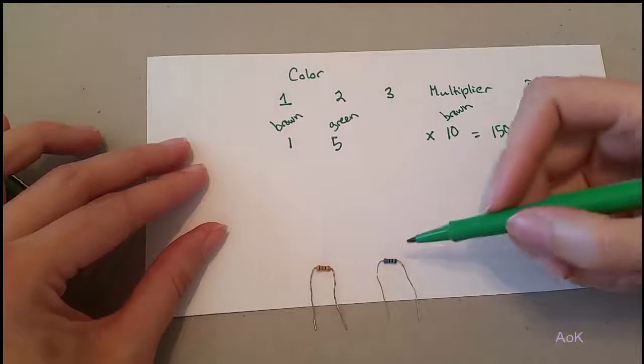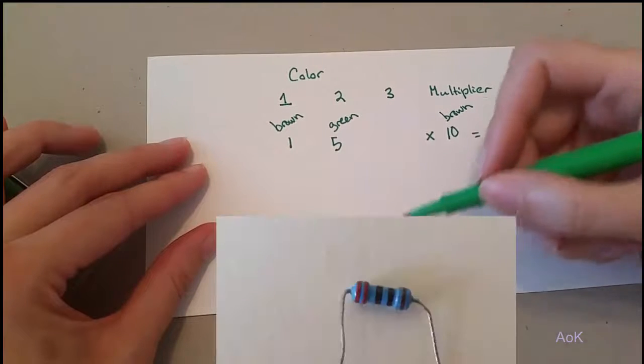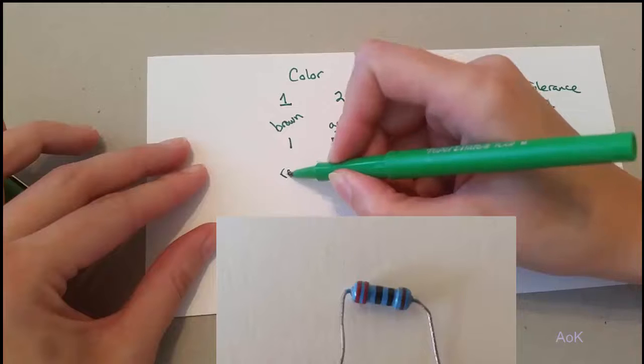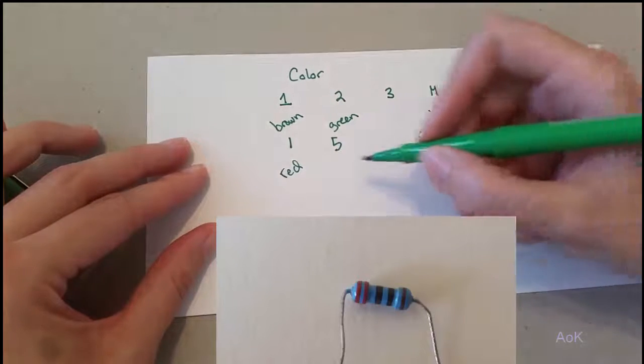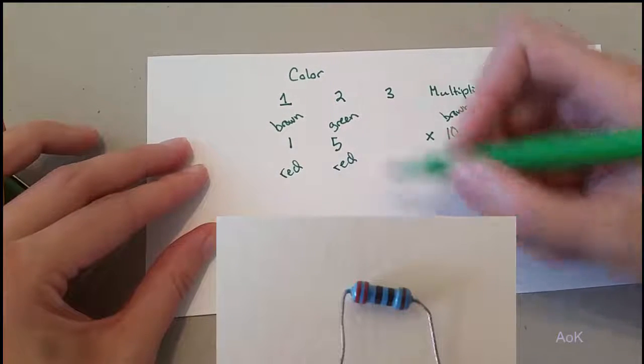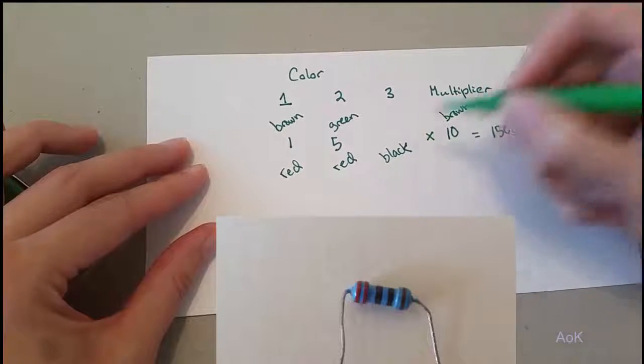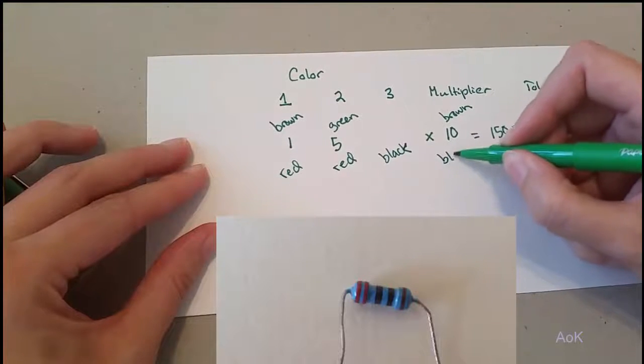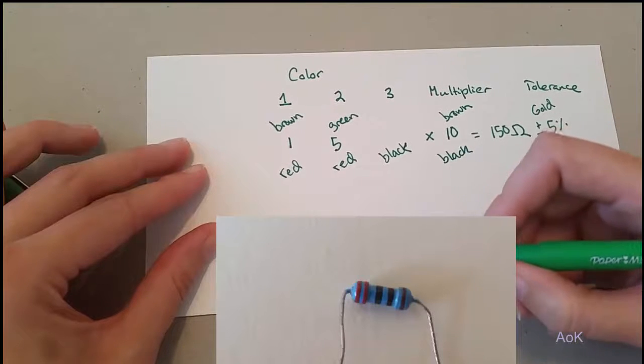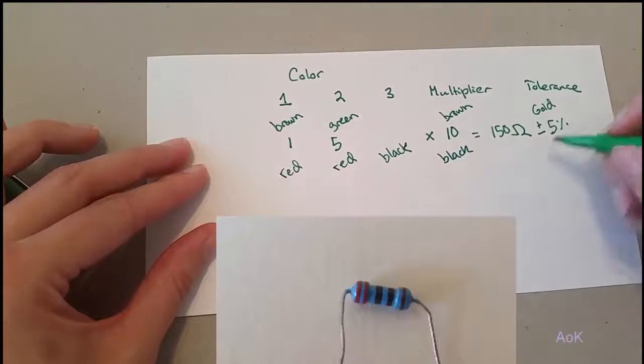Now let's look at a resistor with five bands. The first color is red. The second color is also red. The third color is black. The multiplier is also black. And the very last row for tolerance is brown.